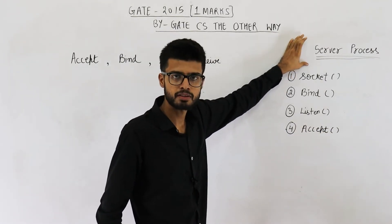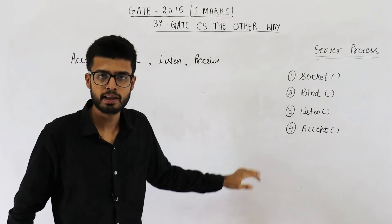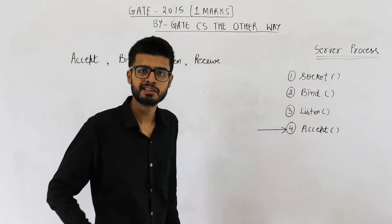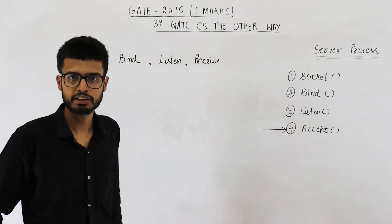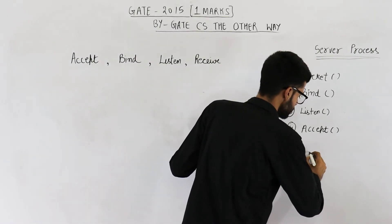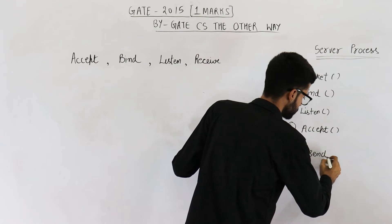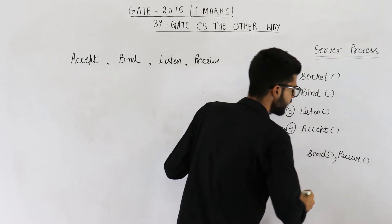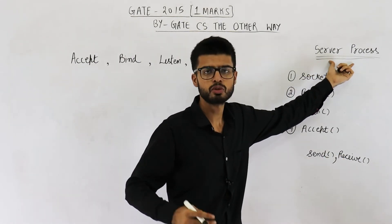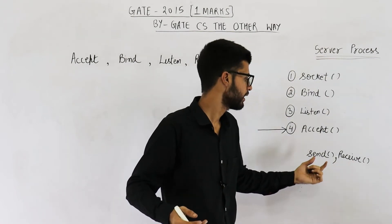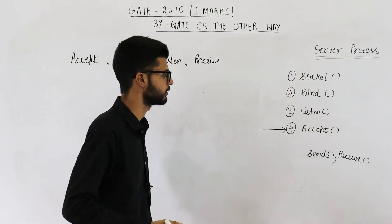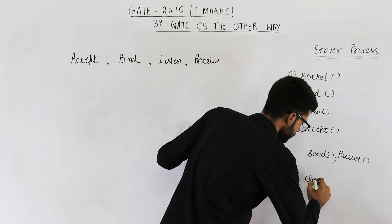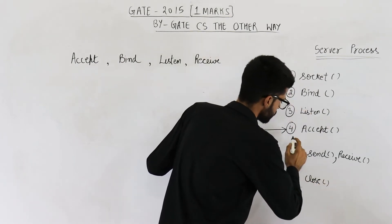This is a server process and some client process may try to connect to it. That connection will be accepted using the accept system call. Now we have established a connection successfully. After this, we can execute send and receive any number of times and in any order. So if this process wants to receive some data, it will execute receive, and in parallel it can execute send for sending some data, any number of times. After this, we will close this connection using the close system call.